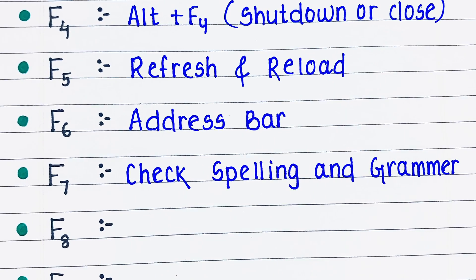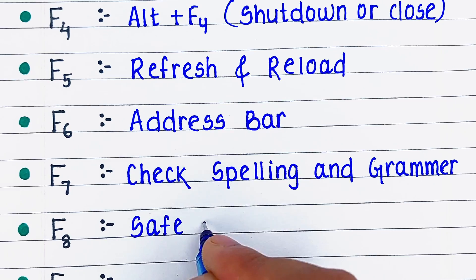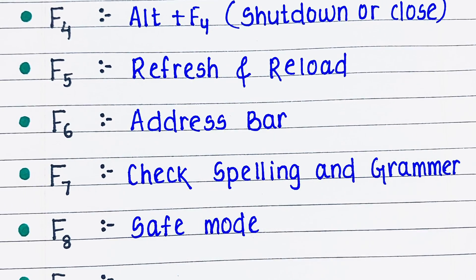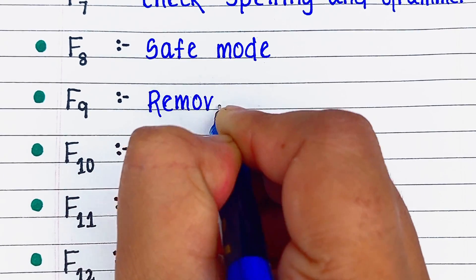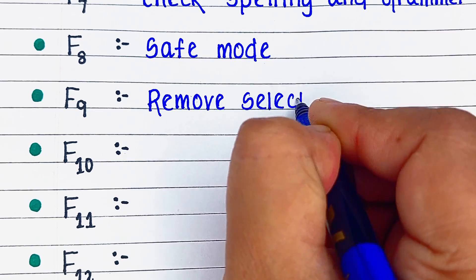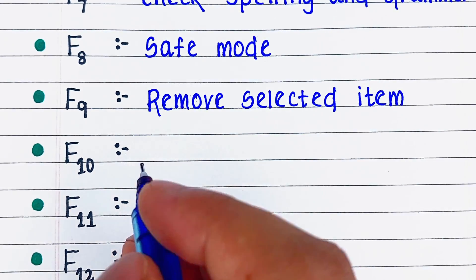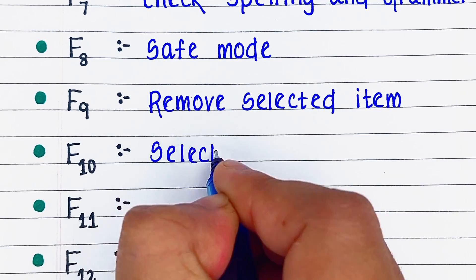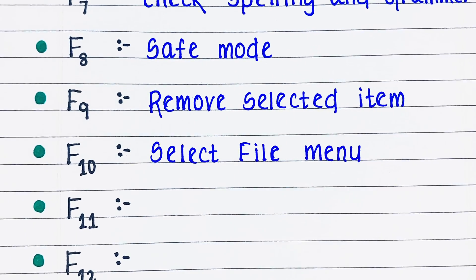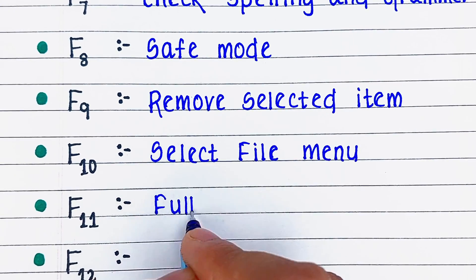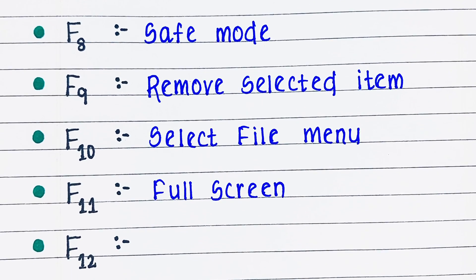Next is F8 — F8 is used for safe mode. Next is F9 — F9 is used to remove a selected item. Next is F10 — F10 is used to select the file menu. Next is F11 — F11 is used for full screen.